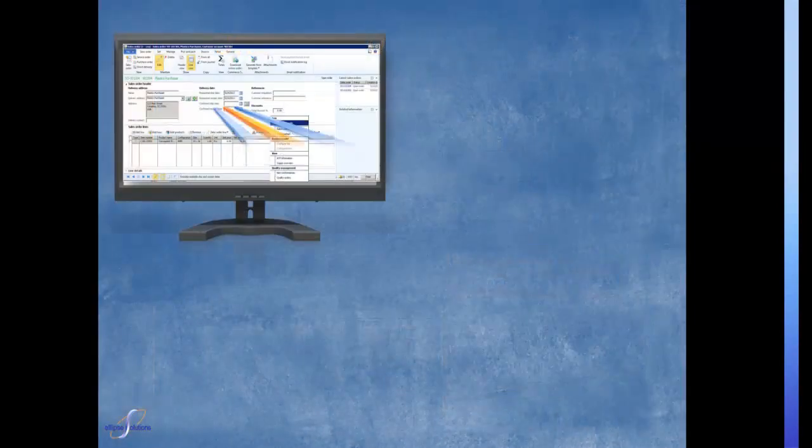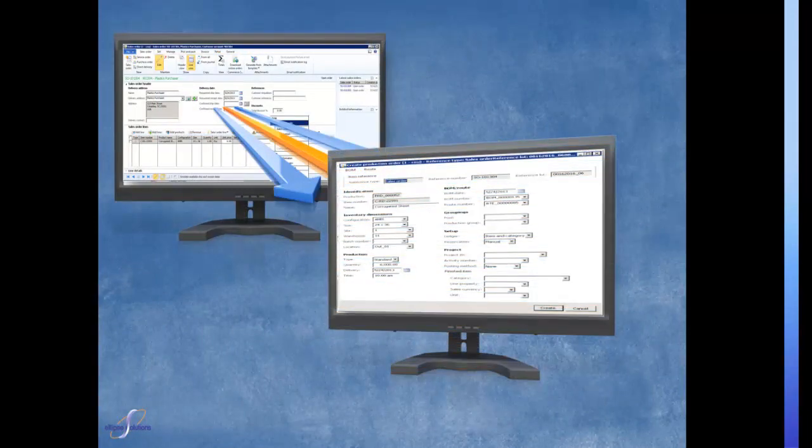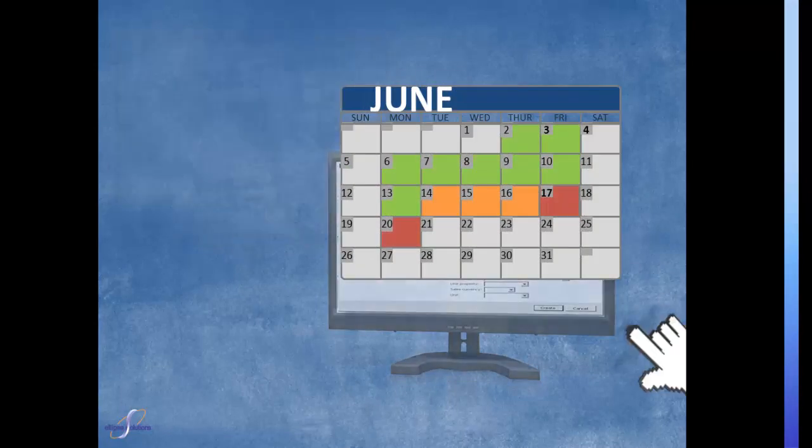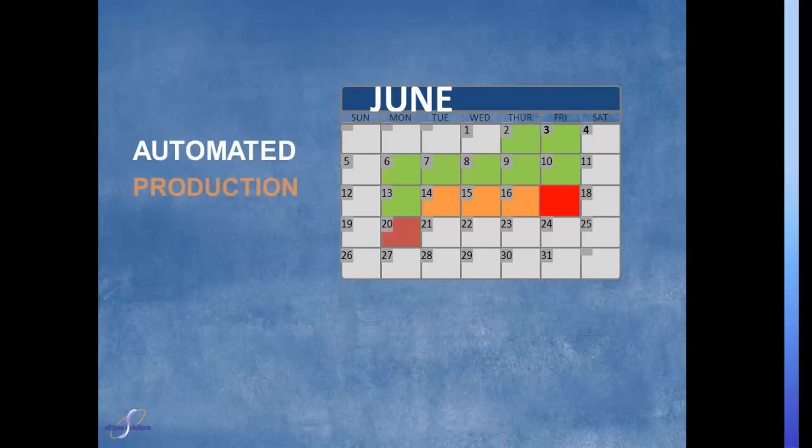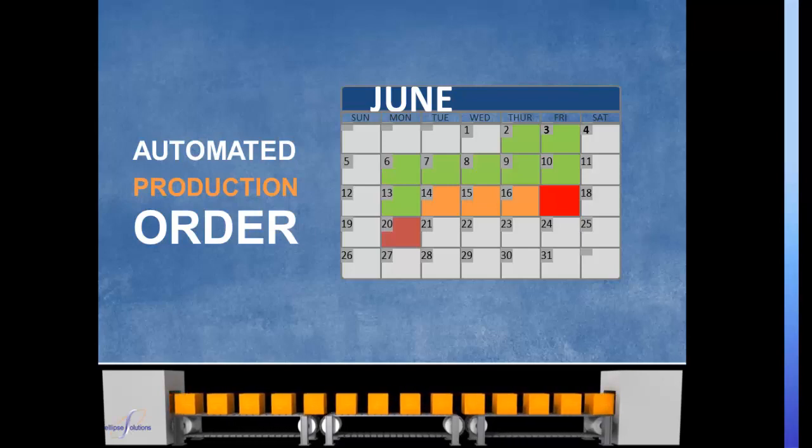Next, a production order is created for this item that will be directly linked to the sales order. This AX for plastics feature saves time by eliminating the need to run the MRP process that produces planned production orders. With AX, this entire process takes a matter of minutes for your customer to place a request for an order, customer service to review and analyze the request, and confirm the order. The order is now ready to be produced.